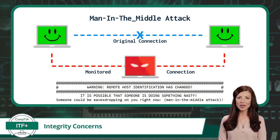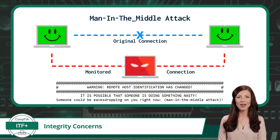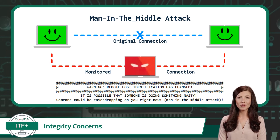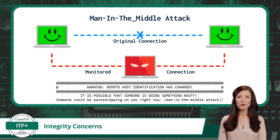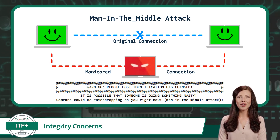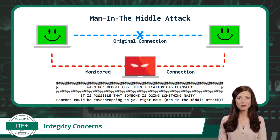First up when it comes to integrity concerns, we have the man-in-the-middle attack. A man-in-the-middle attack is a sneaky eavesdropper in the middle of a conversation. In IT, this is when a hacker secretly intercepts and potentially alters the communication between two parties without either party knowing. This is not only a confidentiality concern, but a huge integrity concern as well.